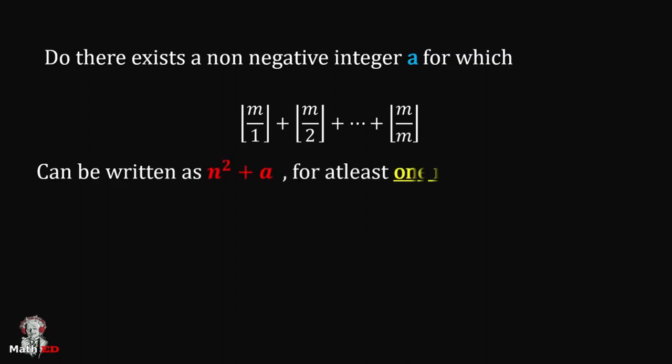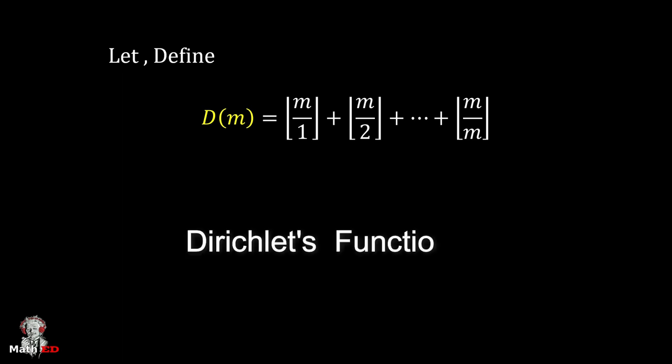Let's move toward the solution. At first, we should define D(m) = floor(m/1) + floor(m/2) + ... + floor(m/m). Now D(m) is known as the Dirichlet function in analytical number theory.